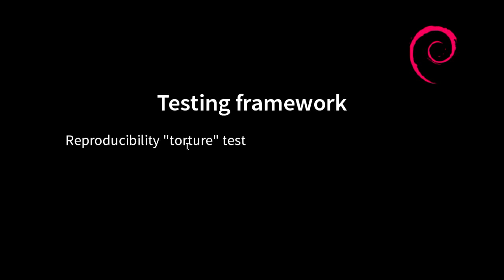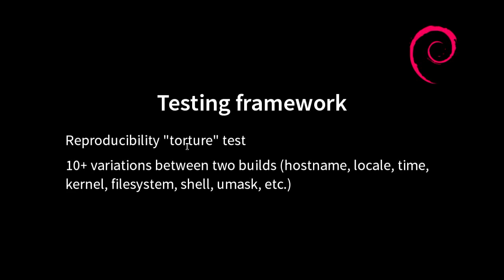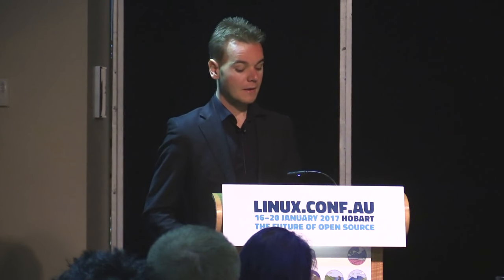Before getting to that, I need to quickly talk about Debian's testing framework. What we do is a reproducibility torture test: we build each package in Debian twice, one after the other, with as many variations between them as possible. We change the time, timezone, locale, filesystem, CPU — basically anything we can possibly change and vary between them. This is to expose as many differences between the two builds as possible.